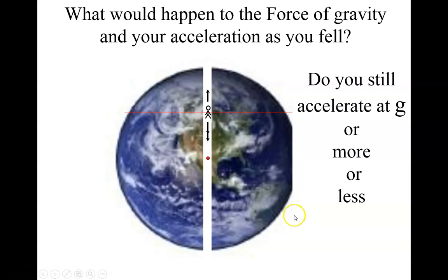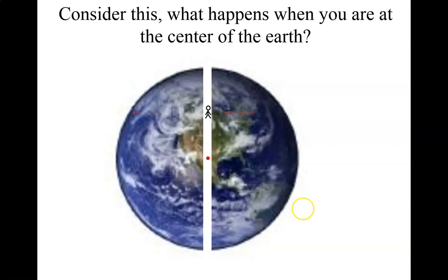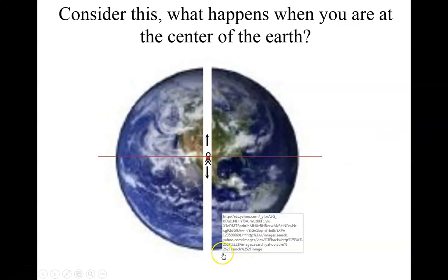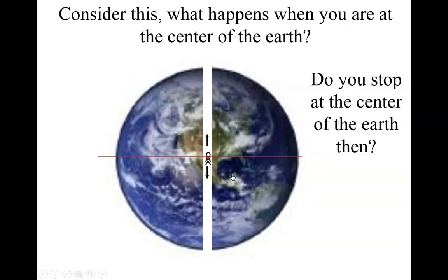So are you going to accelerate at 9.8 or a G more or less? Well, that upward pulling force is going to cancel out some of the 9.8. So you're going to accelerate at less. Let's look at what happens if you're at the center of the planet. Now the force of gravity on you. Well, you've got half of the planet is pulling you up. And the other half of the planet is pulling you down. Those forces are going to cancel. So there's going to be no net force of gravity. Gravity is going to be zero at the center of the planet.